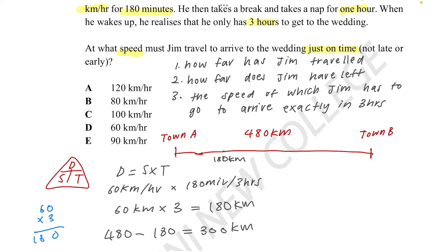Now he only has three hours to get to the wedding. So we're looking at speed here. We know the speed formula is s equals distance over time. So we know the distance would be around 300 and the time would be 3 hours. So if we get rid of the 3, that would be 100. So we need to go around 100 kilometers per hour. Therefore, the answer would be 100 kilometers per hour. Therefore, C.